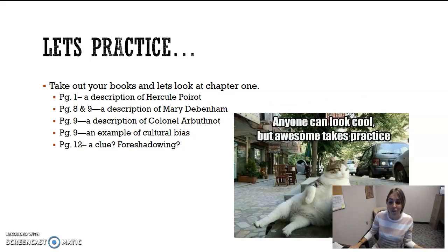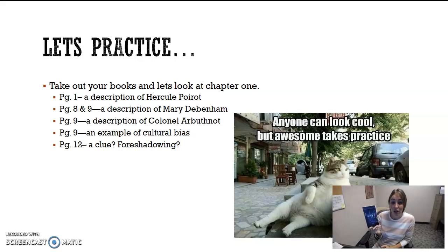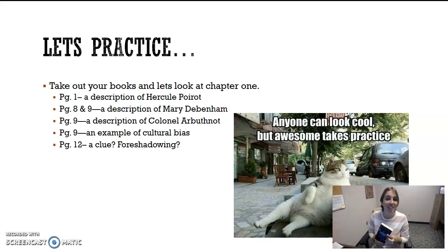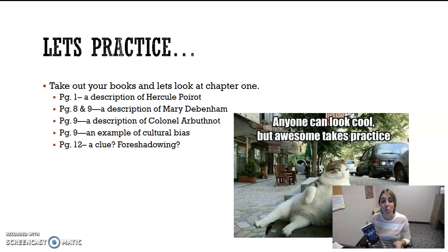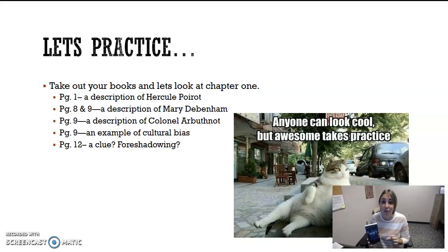For some practice — hopefully we'll have time to chat about this in class today. If you have the 2017 edition of the text, these page numbers will work for you; otherwise it'll be a scavenger hunt through chapter one. On page one, there's a great description of Hercule Poirot — highlight it. Pages eight and nine have great descriptions of Mary Debenham — highlight those. Page nine also has a description of Colonel Arvidneau and an example of cultural bias. Page twelve has a clue we could call foreshadowing. Find and highlight those elements; this is good practice for what you'll do throughout the rest of your reading.